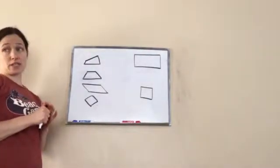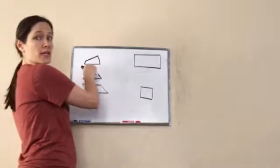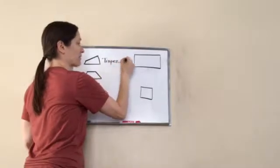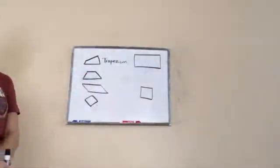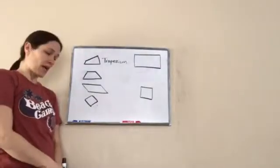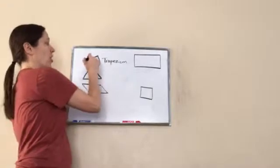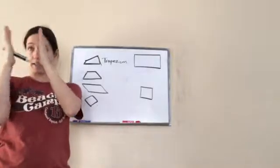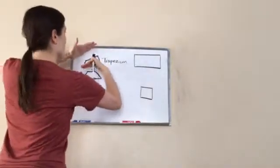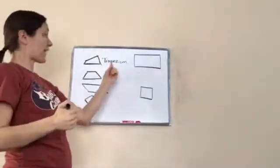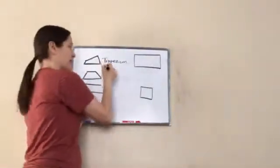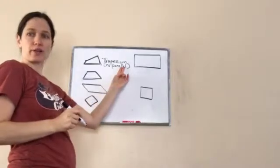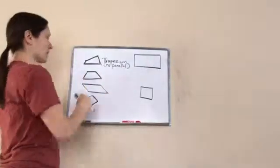Okay, you're going to take really good notes on this. This one is called a trapezium. It's a four-sided shape, but I want you to notice something — are any of these sides parallel? Parallel means they line up perfectly side to side. No — this one's going like this, this one's going like this. There's no parallel. That's what a trapezium is. I'll put underneath it: no parallel sides.